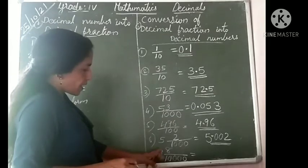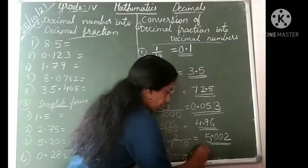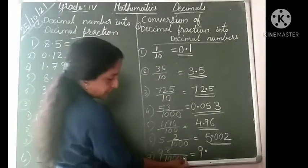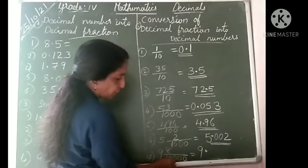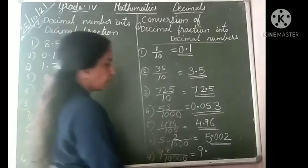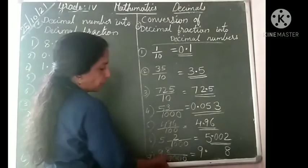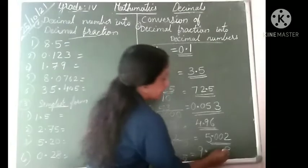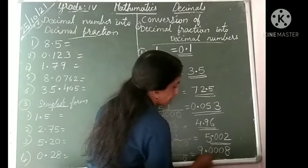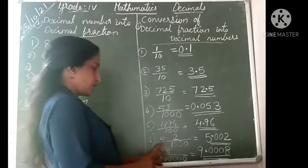Next: 9 and 8 by 10,000. First write the whole part 9 and point. The denominator 10,000 has four zeros, but we have only one digit, 8. We need 3 more zeros to the left — giving 0008. So the answer is 9.0008.